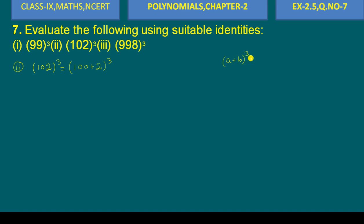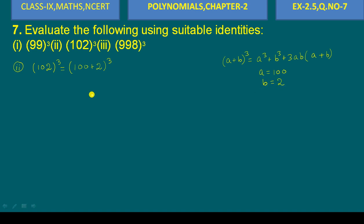We will use the identity (a + b)³. Here, the value of a is 100 and the value of b is 2. So we apply the identity to (100 + 2) whole cube.